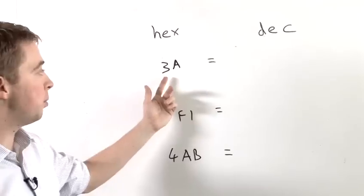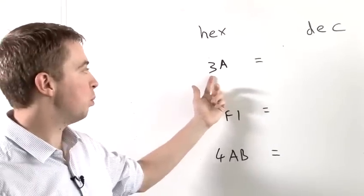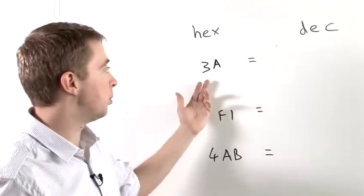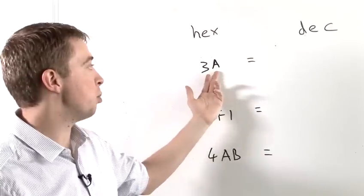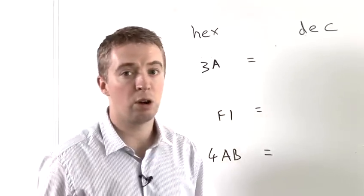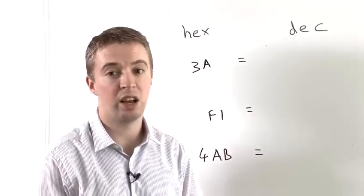Quite simply, in what we would normally call the tens column, we're now calling that the 16s column. And in what we'd normally call the units column, it's still the units column, but it can also contain the letters A to F.